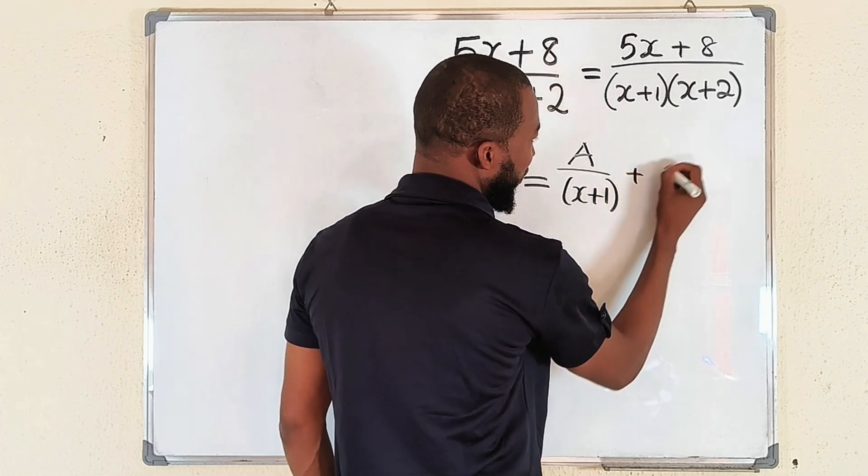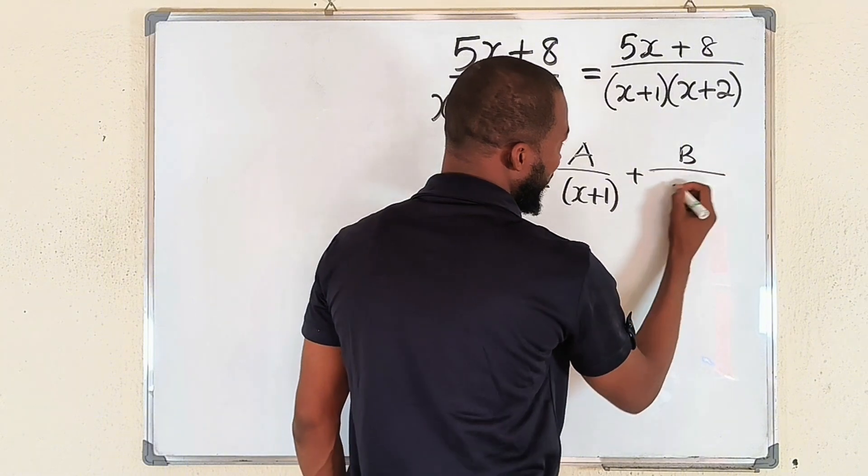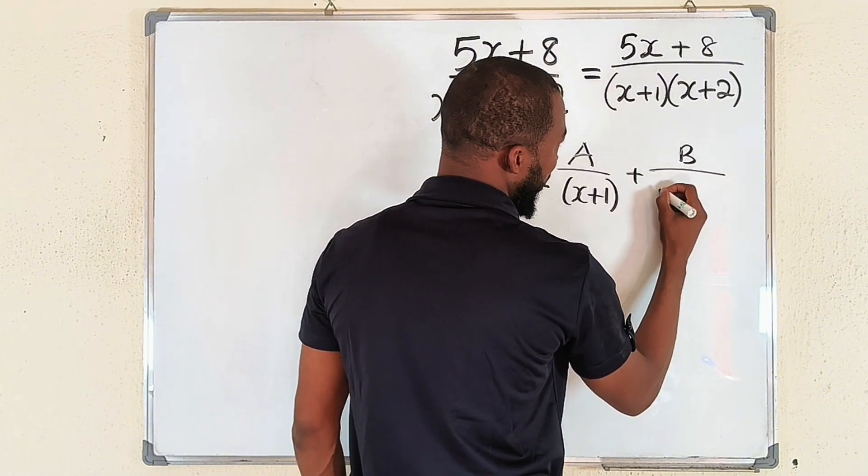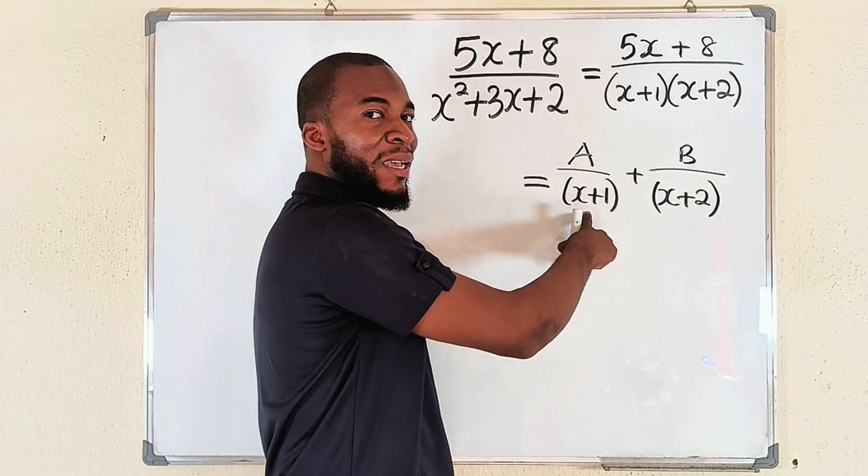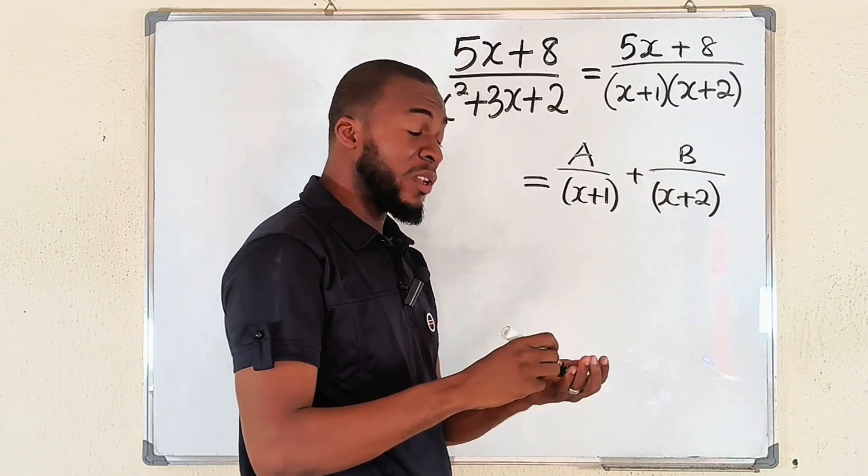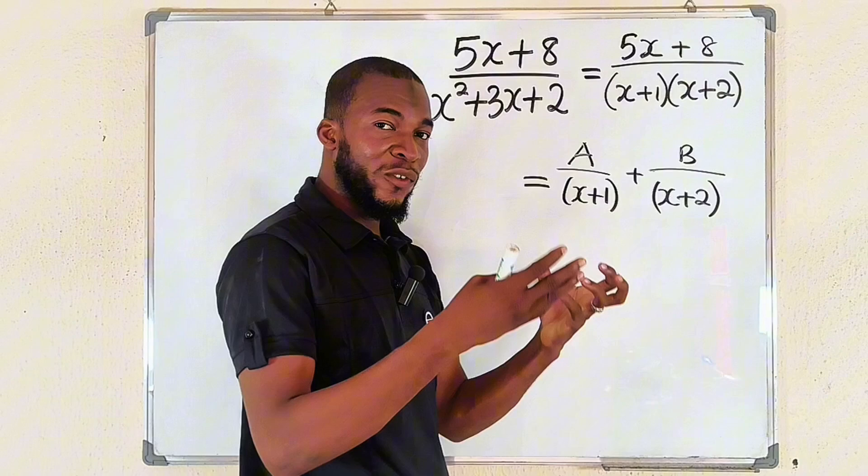Then plus another constant B, because all of them are linear, divided by (x+2). But if the factor is quadratic, one degree less than quadratic will be linear, and the general form of a linear will be ax plus b.